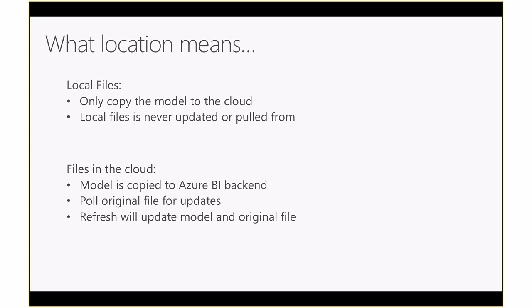For files in the cloud, the model is copied to the Azure BI backend similarly to local files. The difference with OneDrive or SharePoint is that if you make changes to the file on your machine, for local files Power BI won't know about those changes. But if the file is in OneDrive or SharePoint, Power BI can access it in the cloud, check if it changed, and pull those changes in about every hour. So theoretically, you can refresh your data by opening the PBIX, refreshing, saving back to OneDrive — Power BI will pick that up — without ever needing a gateway.